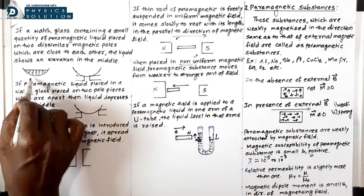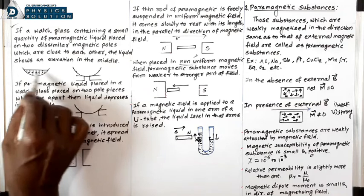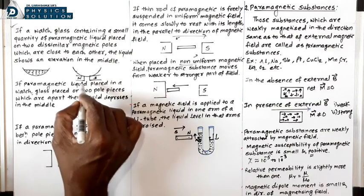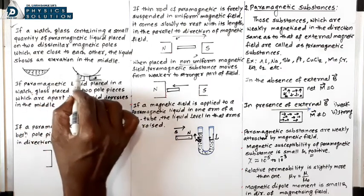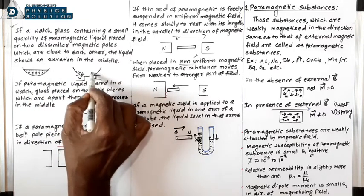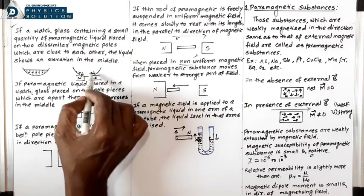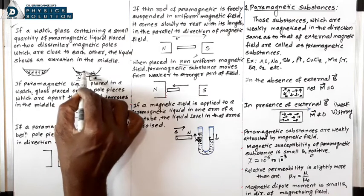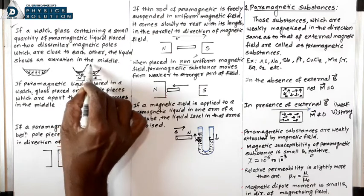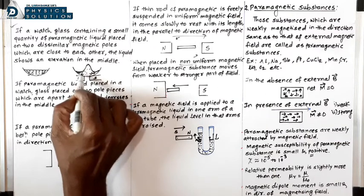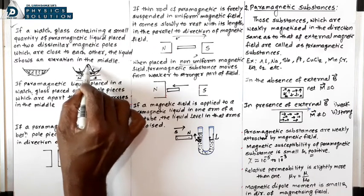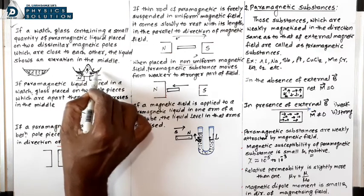When the two poles are placed close with a gap, the liquid molecules in the watch glass are attracted toward the poles of the bar magnet. Because of this attraction, the portion between the poles gets pulled upward — liquid molecules accumulate in the middle — and an elevation is produced in that way.